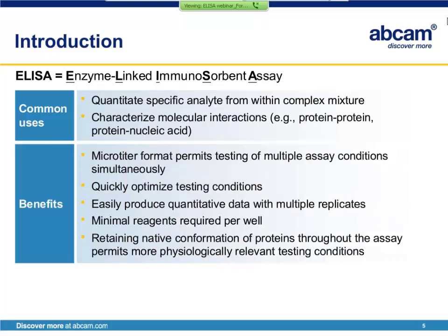There are a number of benefits to using ELISA over other immunoassay formats. A microtiter plate format permits testing of multiple assay conditions simultaneously and allows one to quickly optimize testing conditions. One can easily produce quantitative data with multiple replicates, and due to the small well volume, minimal reagents are required. Retaining native protein confirmation and optimum reaction conditions throughout the assay permit more physiologically relevant testing conditions.